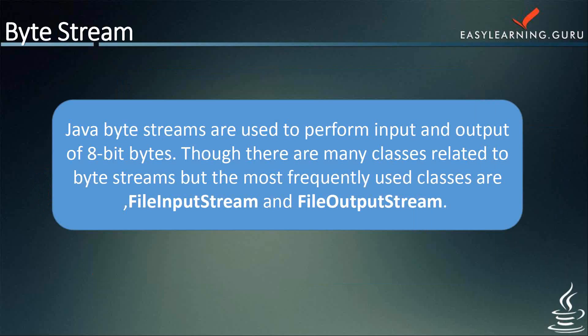Talking about the FileInputStream class: it makes it possible to read the contents of a file as a stream of bytes. FileInputStream is a subclass of InputStream, meaning you use FileInputStream as an input stream. Talking about FileOutputStream: it makes it possible to write a file as a stream of bytes. FileOutputStream is a subclass of OutputStream, meaning you can use it as an output stream.